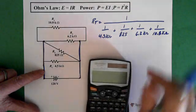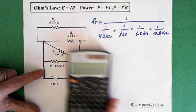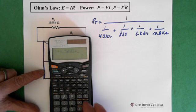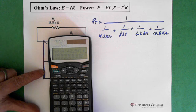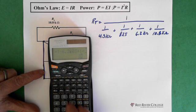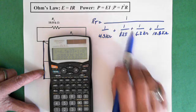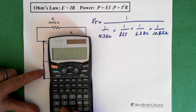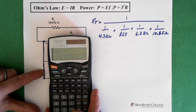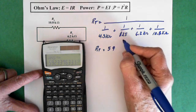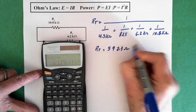Now we do this in our calculator. And again we do the denominator first in the calculator, just because it's easier to calculate. So 1 divided by 4.5 exponent 3, plus 1 divided by 825, plus 1 divided by 6.2 exponent 3, and then plus 1 divided by 10.8 exponent 3 equals. Now here we have solved for the denominator. So now we do x to the minus 1, which gives us 1 over that. So second function x to the minus 1 equals 592.3 ohms. So our RT equals 592.3 ohms. There's total resistance.